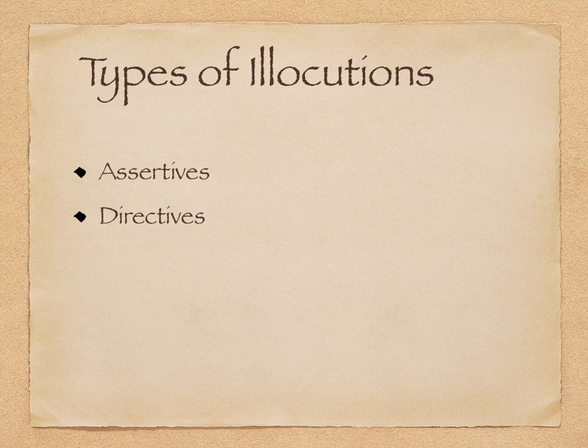The second type of illocution is what's known as a directive. In a directive, the speaker is trying to get someone to do something — that might be through the giving of commands, through persuasive speech, invitations, or any number of things. The idea is that the speaker is trying to get the listener to do something they want them to do. Then we have commissives. In commissives, the speaker commits themselves to doing something by that utterance. 'I promise to do this' is a commissive — it's not simply about information transfer, it's actually doing something: committing someone to something.